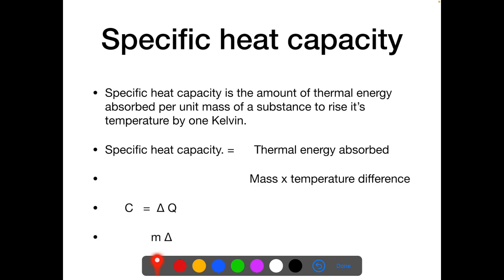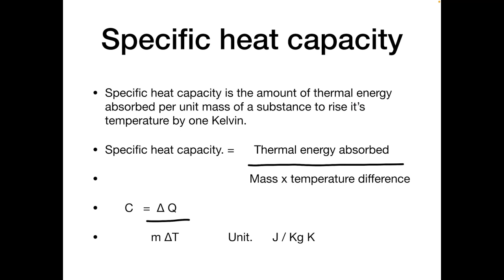In symbolic form, we can write C as ΔQ by M ΔT, where the unit for specific heat capacity would be joules per kilogram per Kelvin. This is how we state specific heat capacity. Sometimes they also ask us to write the statement. We are just focusing right now on the question solution instead of the topic. We will have a detailed discussion on specific heat capacity in some other tutorial.